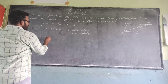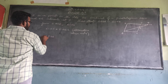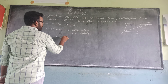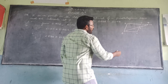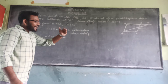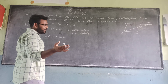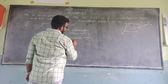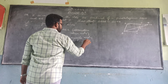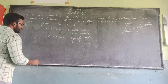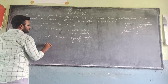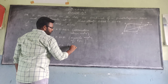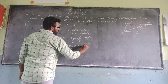Also, angle EAB is equal to angle BCF because in a parallelogram, opposite angles are equal. So two angles are equal. By using the AA (angle-angle) criterion, triangle ABE is similar to triangle CFB.